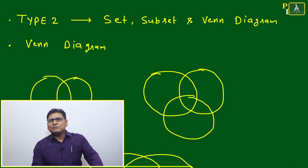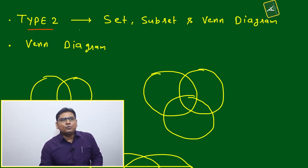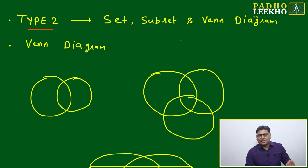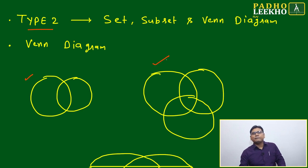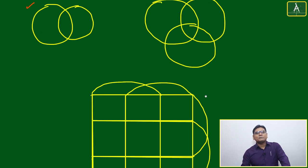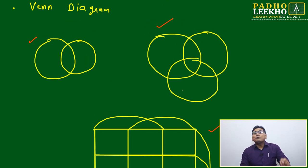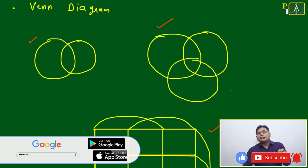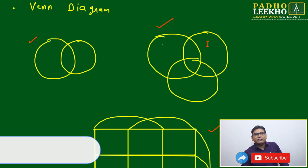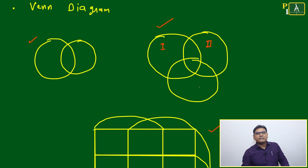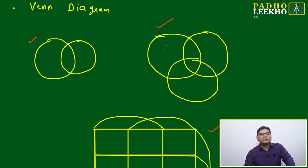VLD stands for Vertical Line Diagram. Type 2 DI is based on sets, subsets, and Venn diagrams. Venn diagrams are generally represented in 2D form using circles — two circles for two variables, three circles for three variables, and a different arrangement for four variables. This helps us understand common areas, overlap areas, and maximum or minimum overlap.